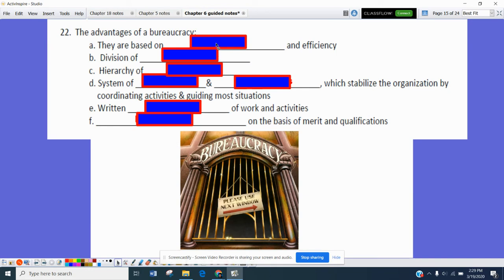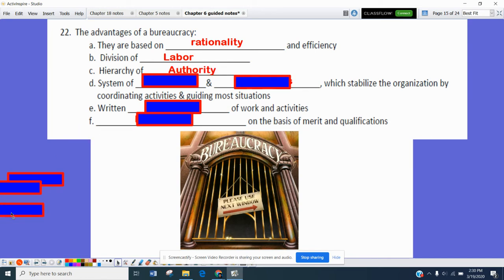Advantages of a bureaucracy. They're based on rationality and efficiency. They are a division of labor so that way we can get things done very rapidly. There is a hierarchy of authority or an opportunity for people to rise up and achieve some kind of status within the organization.